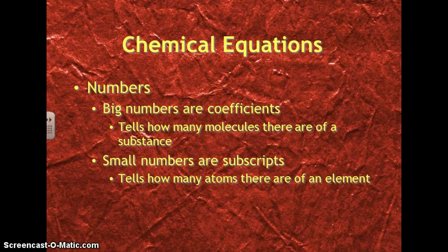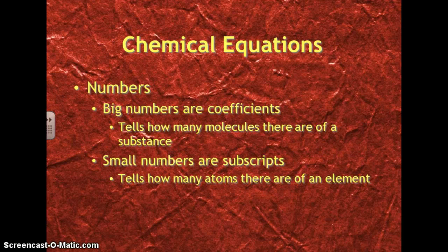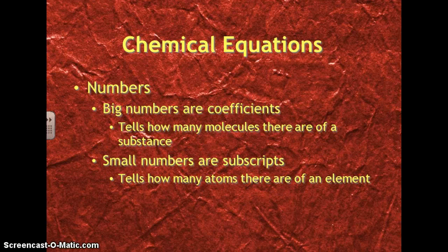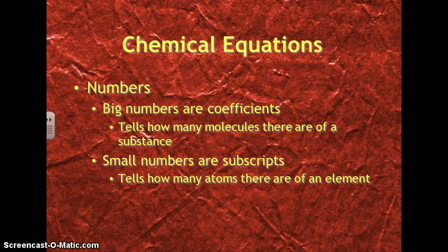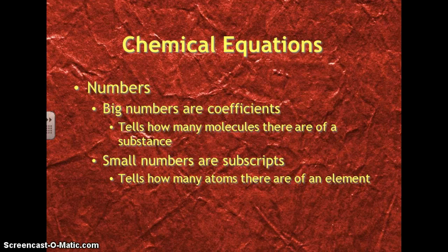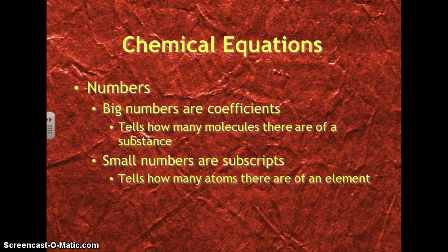We're also going to use numbers in chemical equations. The large numbers that come before the symbols are going to be called coefficients. These tell us how many molecules there are of a substance. Then we have small numbers that are subscripts. They're going to be a little bit below the chemical symbol, and they're going to come after the chemical symbol, or the element symbol. These are going to tell us how many atoms there are of an element.